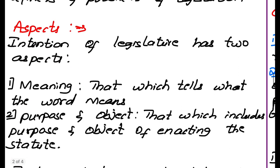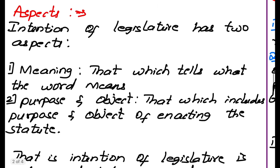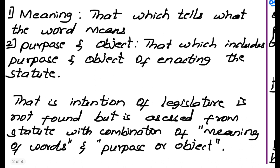Intention of legislature has two aspects. First, meaning — that which tells what the words mean. The next aspect is purpose and object — that which includes the purpose and object of enacting the statute. The intention of legislature is not simply formed but is assessed from the statute by combining the meaning of words and the purpose or object.